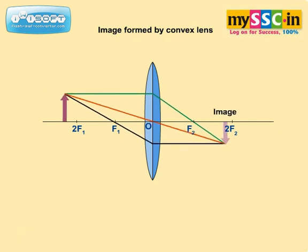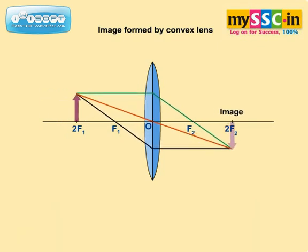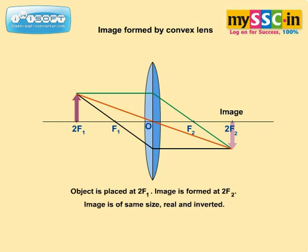When the object is placed at 2F1, the image is formed at 2F2. The image is of the same size, real, and inverted.